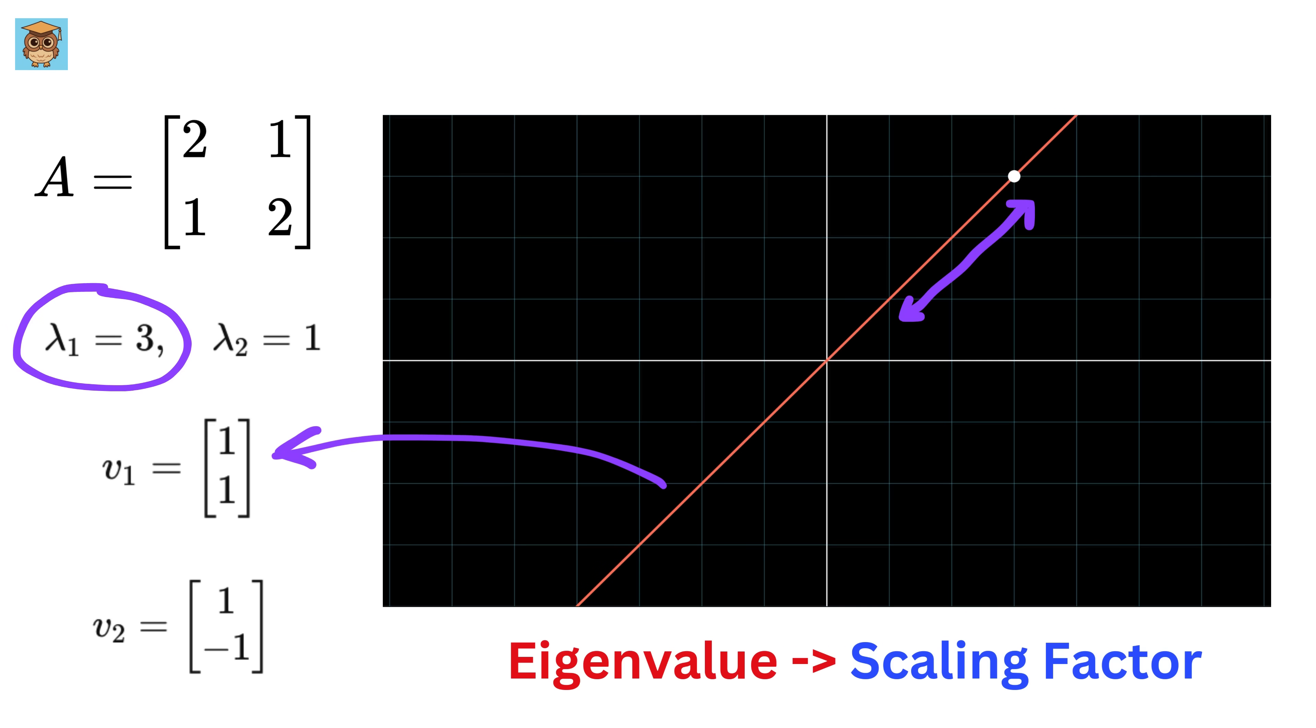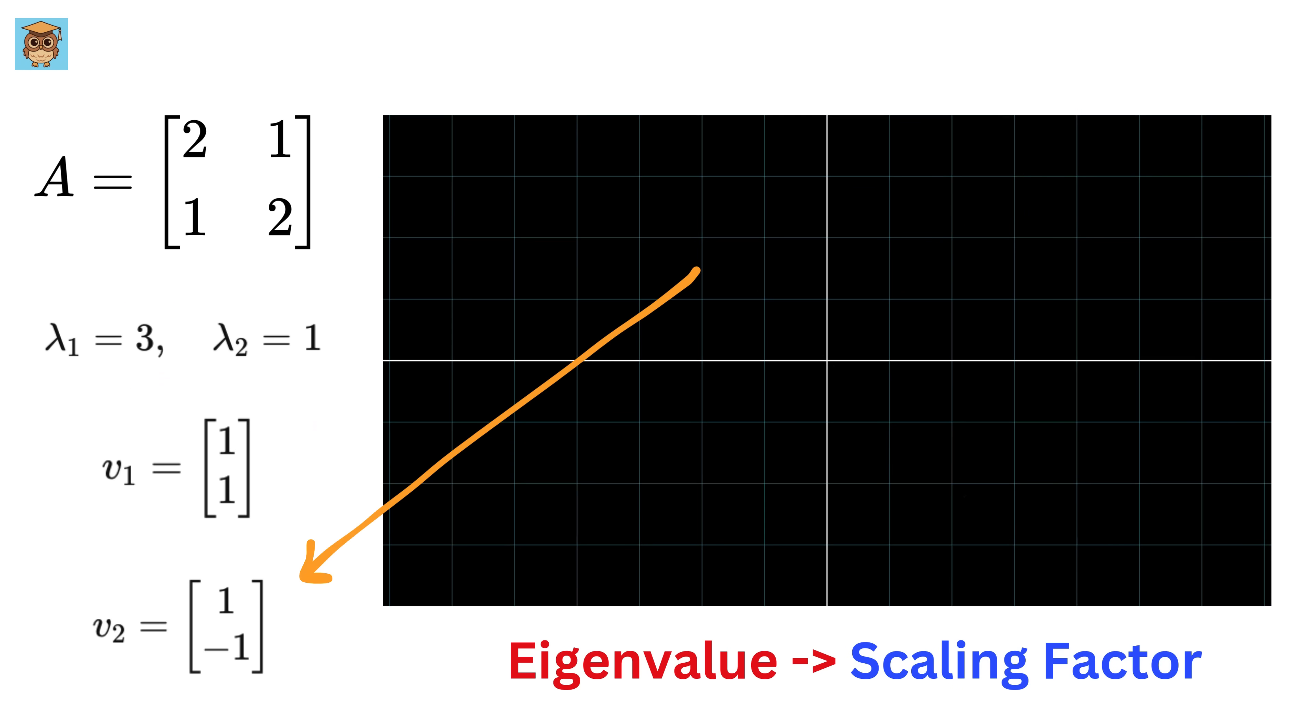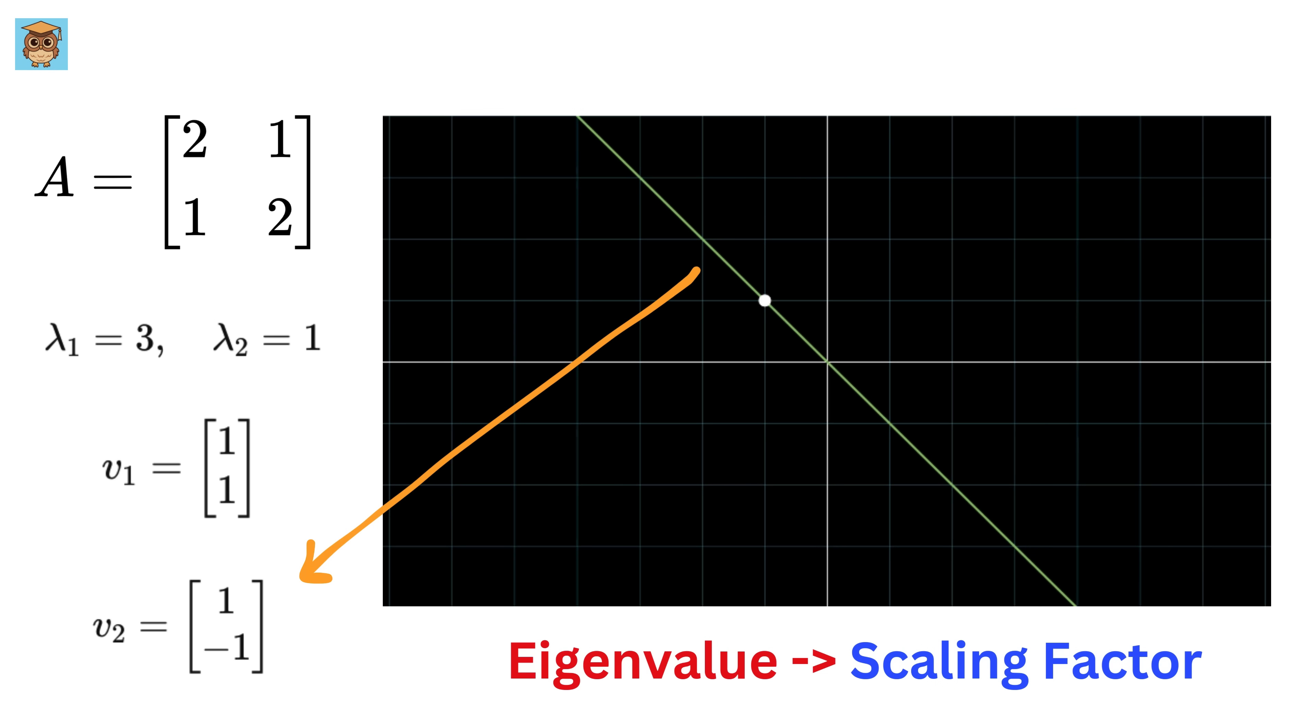That means the eigenvalue corresponding to this eigenvector is 3. We also have this other line where x is equal to negative y. The vectors along this line neither get rotated nor scaled. It remains the same, meaning the eigenvalue here is 1. That's what eigenvalues and eigenvectors mean in real life.